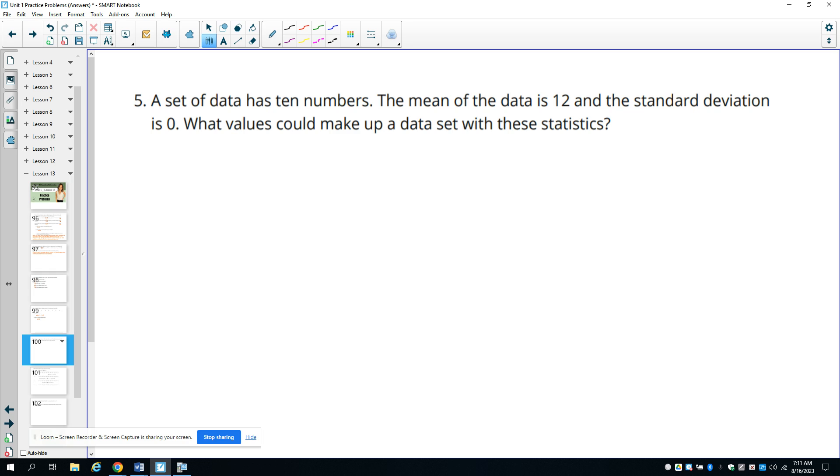Number five, a set of data has 10 numbers. The mean of the data is 12 and the standard deviation is 0. What could make up the data set with these statistics? Well, if there's no variation in the data, then the data has to be equal to the mean. So that would mean we'd have all 12s. So you'd have 10 12s.